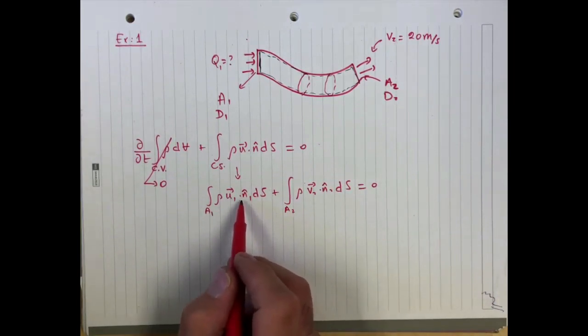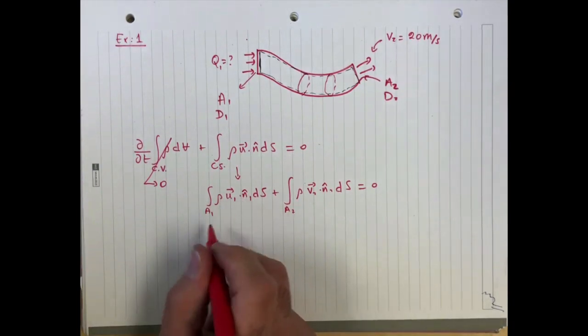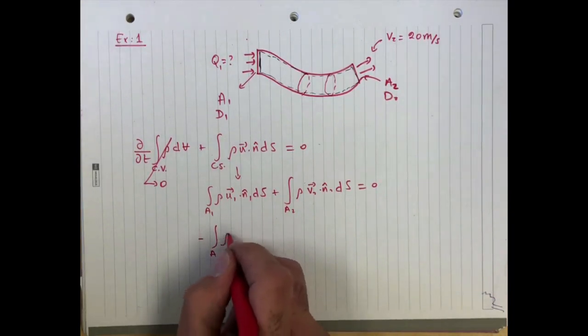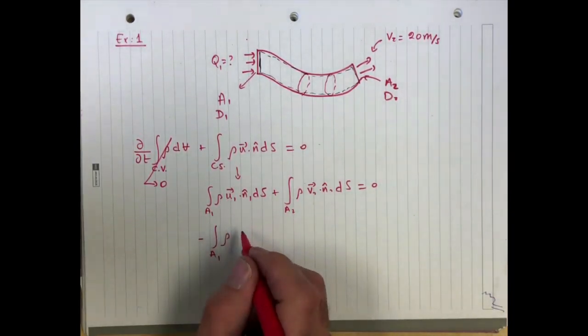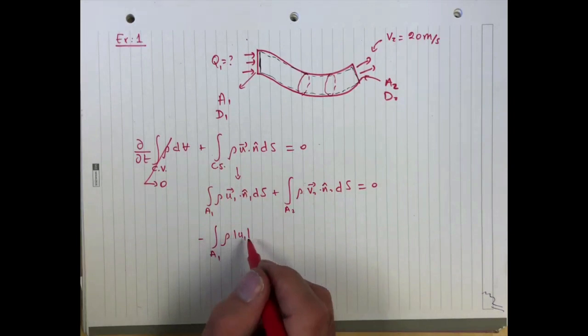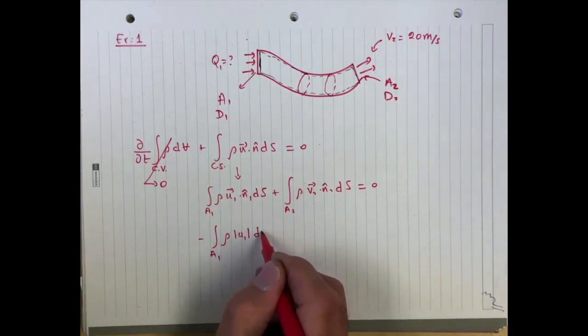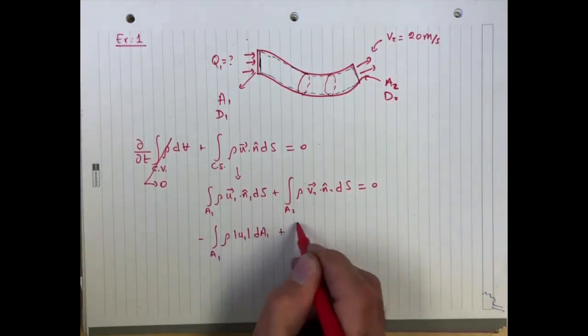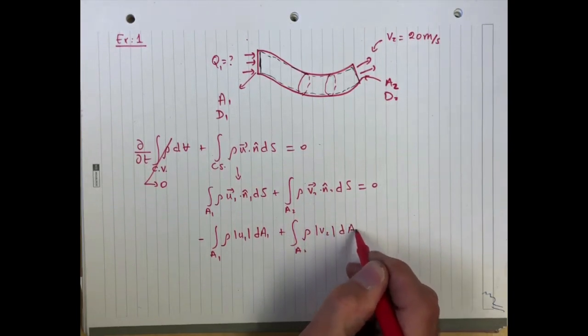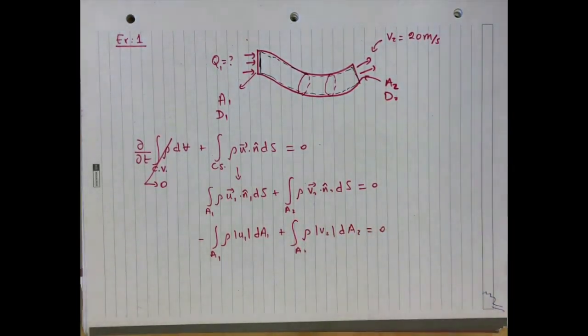Now we said u1 is parallel to n1, it's parallel to n1, and it's in the opposite direction. So this is just simply equal to the minus of the integral over a1 of rho, and then u1, the magnitude of u1, so that's just simply you want to make sure that u1 is given as a value, times dA1 plus the integral over a2 of rho, same thing over here, and this is positive. So v2 u2 times dA2 is equal to zero.